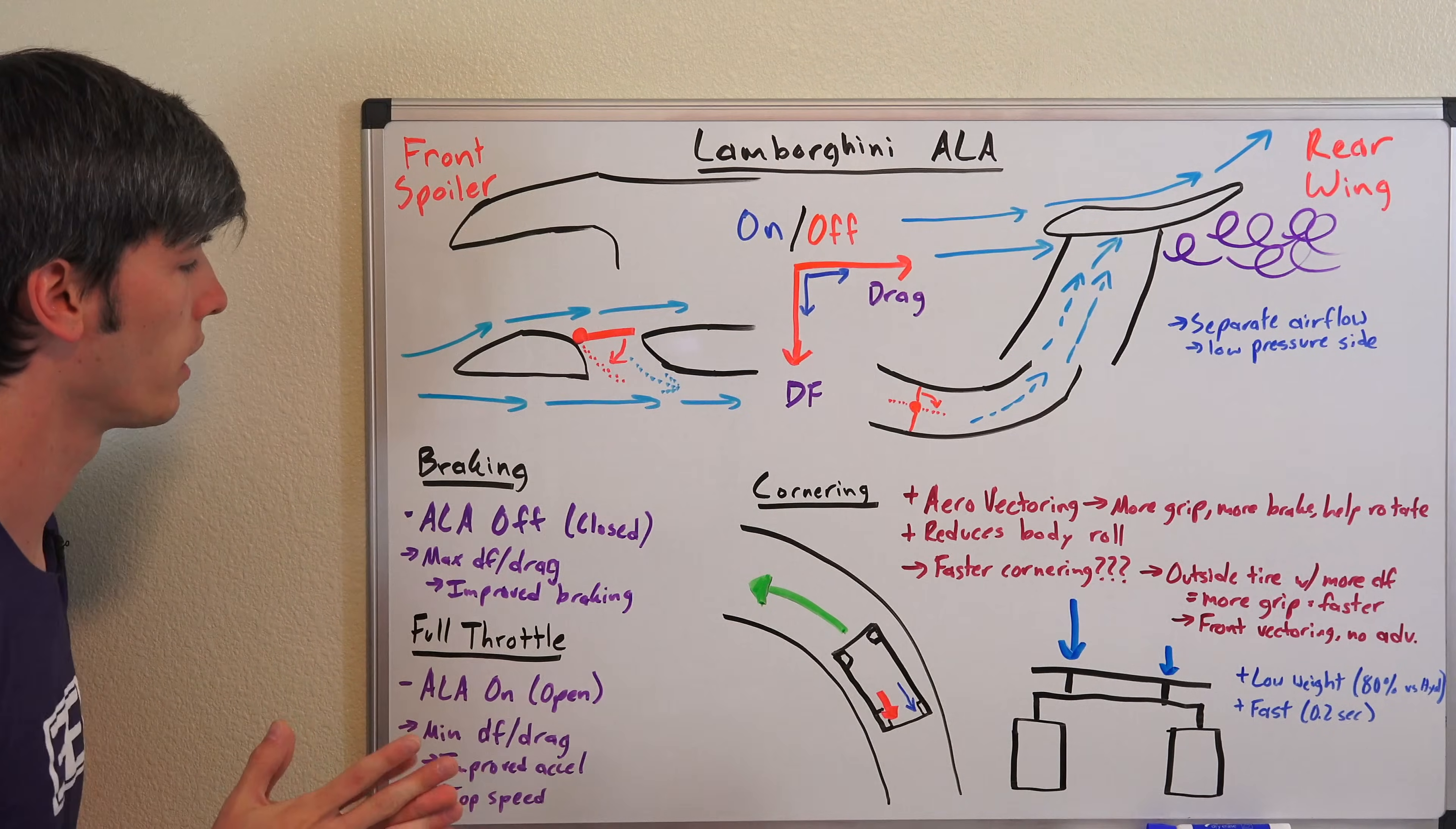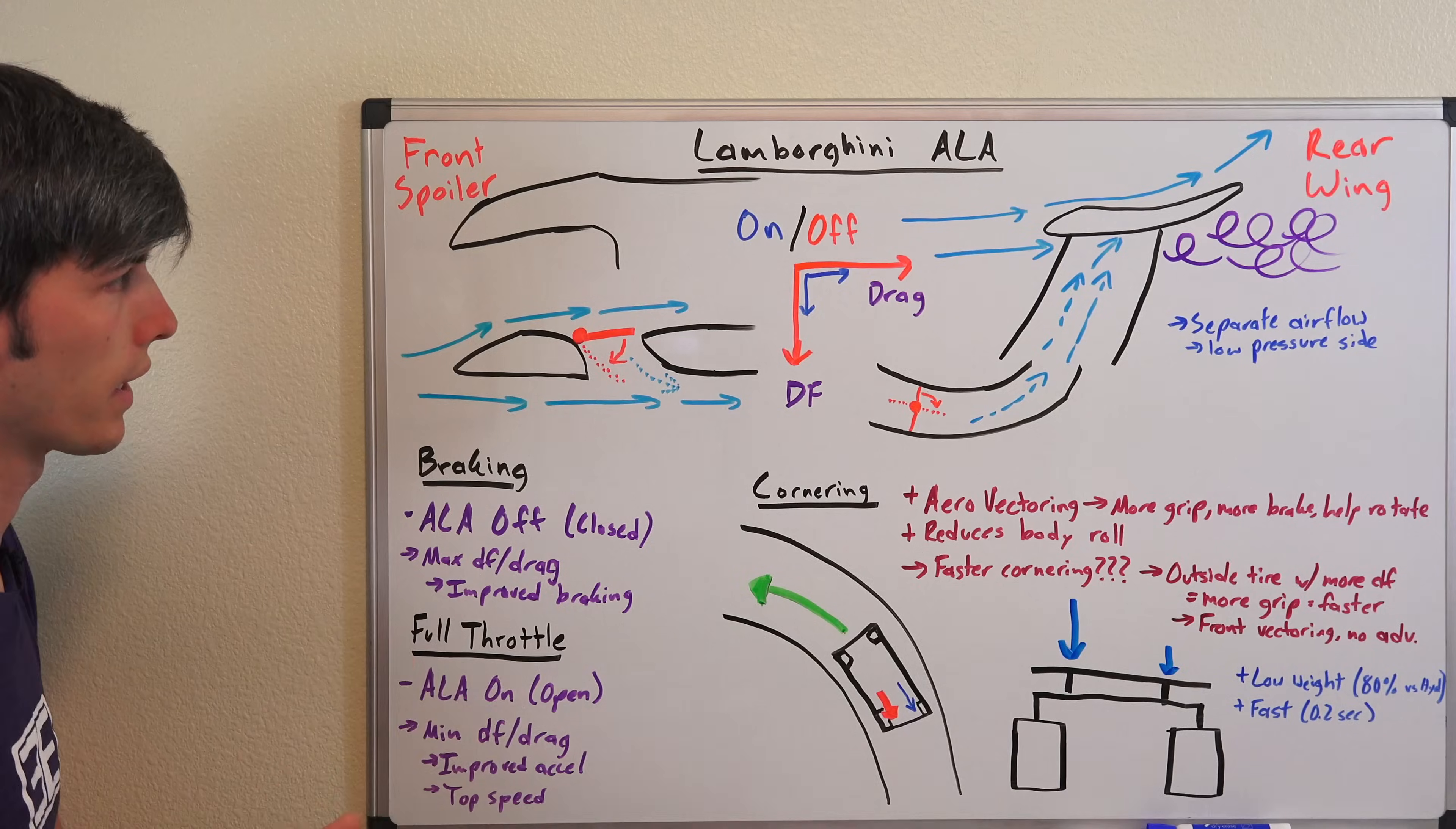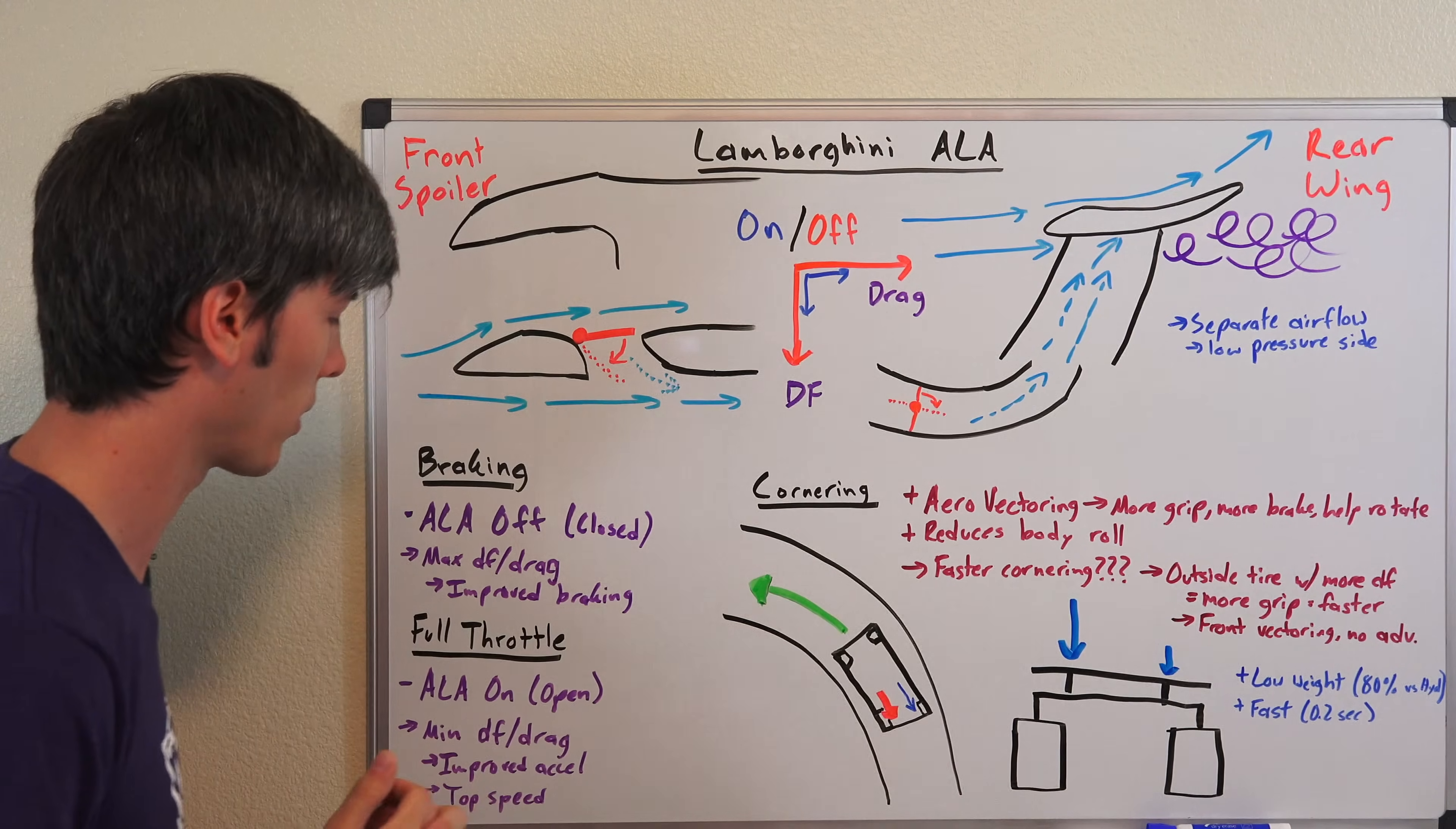So what are some scenarios where each of these would be ideal? Well under braking you're going to have the ALA system off, that means both your valves are going to be closed. This is going to maximize your downforce in the front and the rear and it's going to improve your braking. Not only because you have more downforce to help brake with those tires, but you also have more drag to help slow the car down aerodynamically.